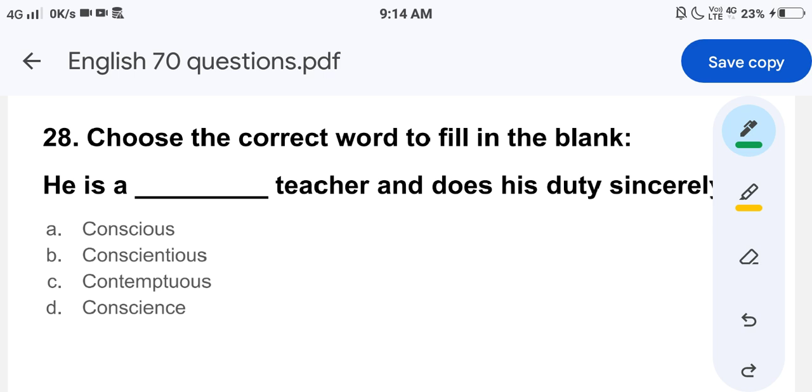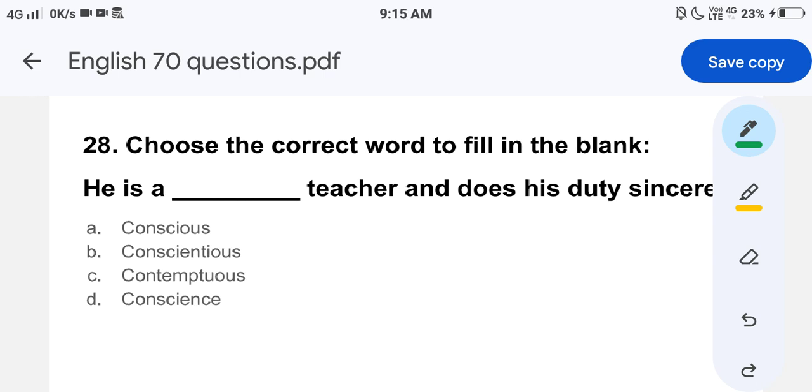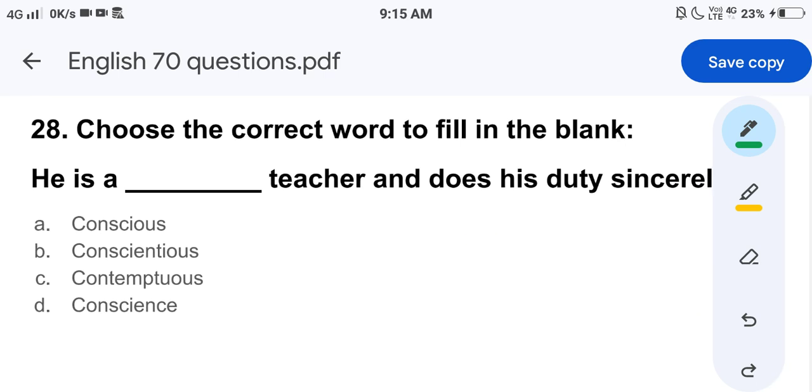Now let's move to the next question. Choose the correct word to fill in the blank: He is a ___ teacher and does his duty sincerely. The options are conscious, conscientious, contemptuous, and conscience. Now let's look at the first option's meaning. What is conscious? It means aware of and responding to one's surroundings. Option B, conscientious, means wishing to do one's work or duty well and thoroughly. Option C, contemptuous, means being disrespectful. Option D, conscience, means a person's moral sense of right and wrong viewed as acting as a guide to one's behavior.